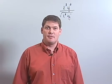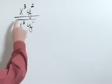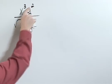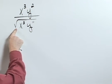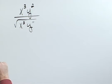Rationalize the denominator and simplify. x to the third y squared over the square root of x to the third y to the eleventh.